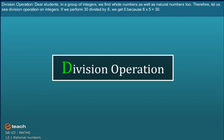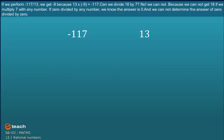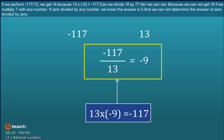Division Operation. Dear students, in a Group of Integers, we find Whole Number as well as Natural Numbers too. Therefore, let us see Division Operation on Integers. If we perform 30 divided by 6, we get 5 because 6 into 5 is equal to 30. If we perform minus 117 by 13, we get minus 9. Because 13 into minus 9 is equal to minus 117.